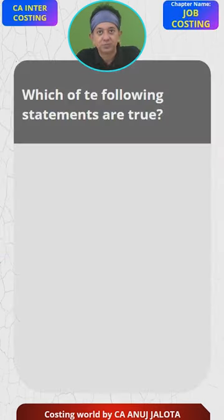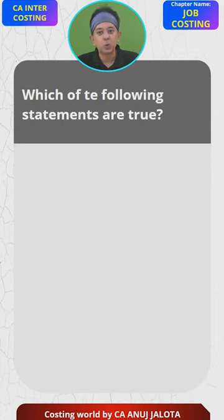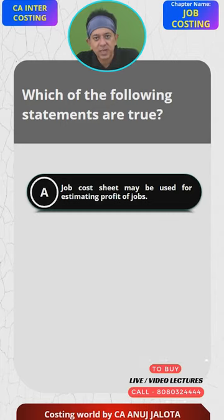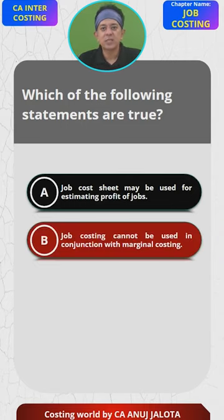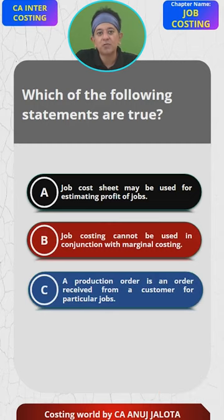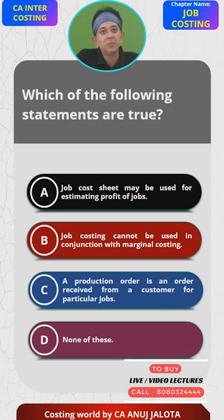The question for today is: which of the following statements are true? Option A: Job cost sheet may be used for estimating profits of the jobs. Option B: Job costing cannot be used in conjunction with marginal costing. Option C: A production order is an order received from a customer for a particular job. Option D: None of these. We'll have to examine A, B, and C to find the correct answer.